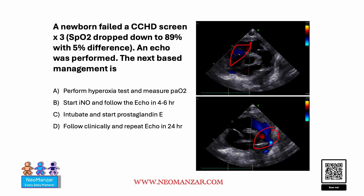Now let's try to answer the question. The correct choice here is D. Performing the hyperoxia test and measuring the PO2 is not appropriate anymore because we have echo readily available. This was an old practice where we used to give the newborn 100% oxygen and measure PO2 — if it goes above 150 we'd rule out cardiac disease — but echo should be done instead.